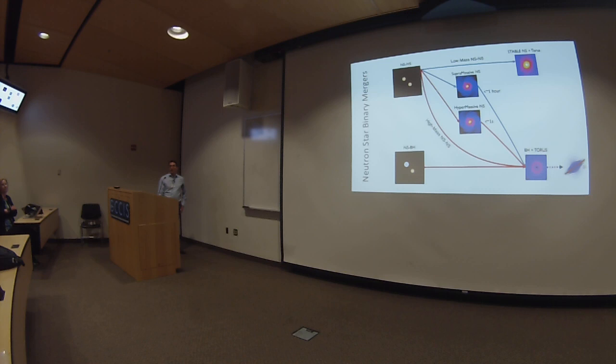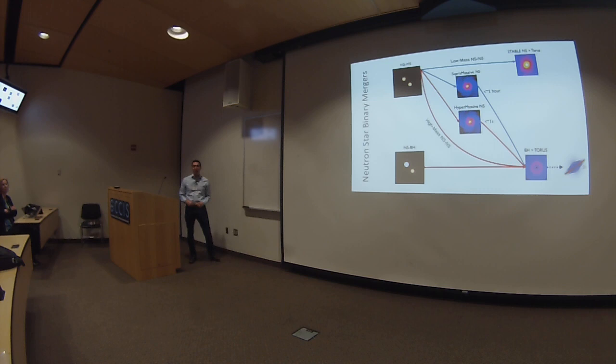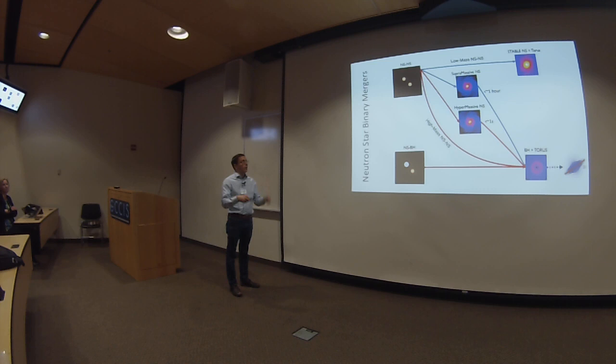In the case of binary neutron stars, the dynamics can be very complicated, and you can have several post-merger scenarios depending on the equation of state of neutron star matter — which is something we don't know — and the total mass of the binary. I highlight four different channels: two in red, which I call the high mass scenario, and two in blue, which I call the low mass scenario.